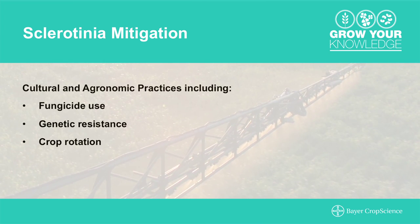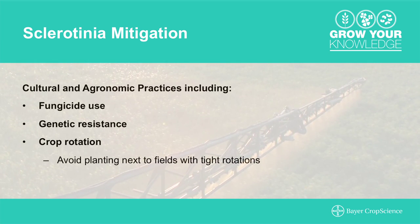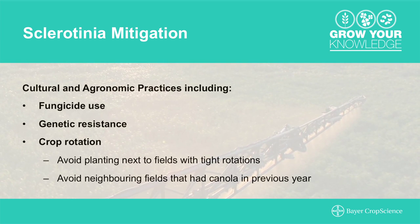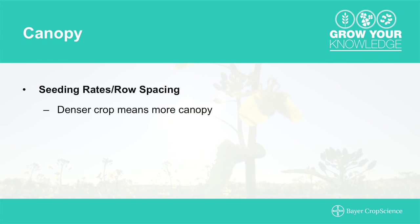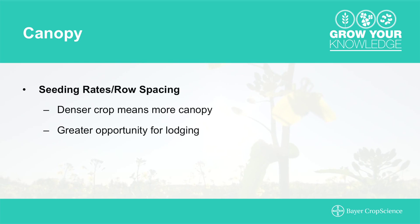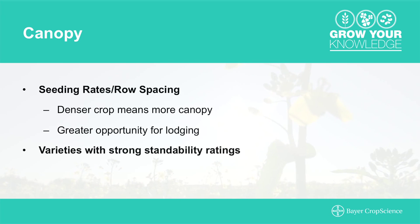There's no real correlation with sclerotinia incidence between years with susceptible crops, as has been proven in the past. However, you should try to avoid planting in fields with a tight rotation with canola or another susceptible crop, and if at all possible, avoid fields neighboring those that had canola the year before. Regarding seeding rates and row spacing, a thicker, denser crop creates more canopy, which makes a better microclimate for apothecia to thrive. A thick stand also results in more lodging potential, and you can get cross-infection when diseased plants lodge onto neighboring plants. Consider using varieties with stronger standability ratings to help prevent lodging.